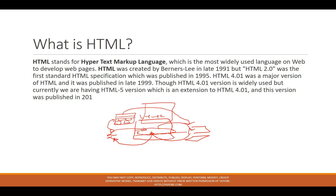HTML is an acronym or abbreviation. H stands for Hyper, T stands for Text, M stands for Markup, and L stands for Language. So HTML is Hypertext Markup Language. It was first introduced in 1991, and then the next version came as HTML 2.0. Right now we are in HTML 5, and the version keeps growing.